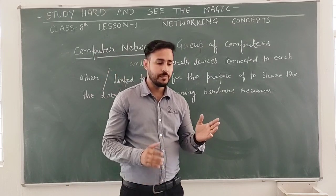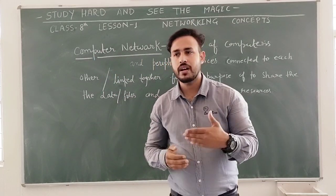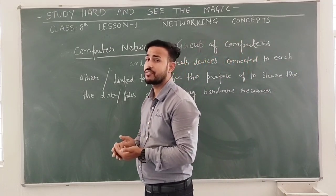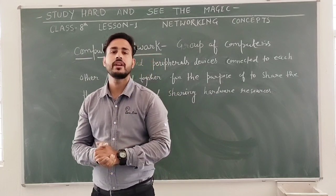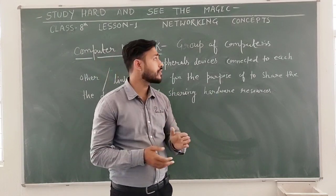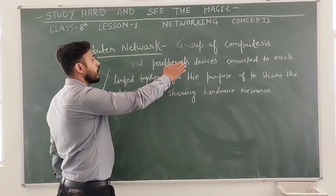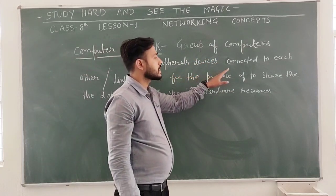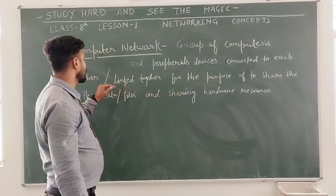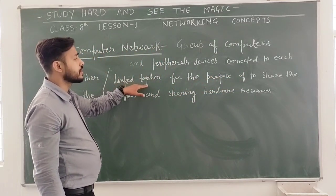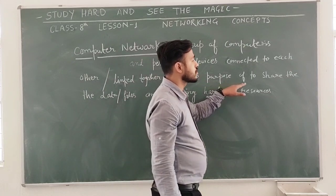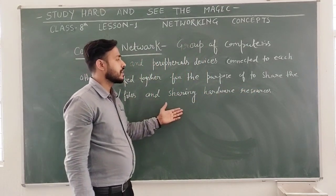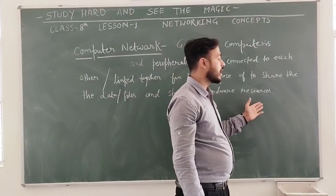So basically, if we are talking about computer network — because the topic is computer network — a computer network is a group of computers and peripheral devices connected to each other, or linked to each other, to share data, files, and hardware devices and hardware resources.